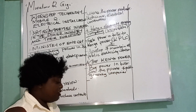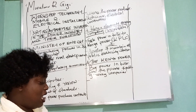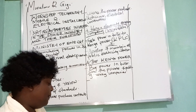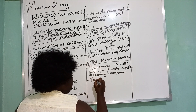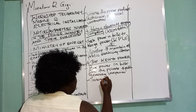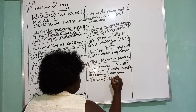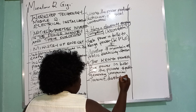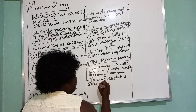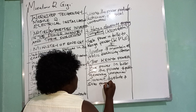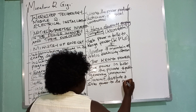The Kenya Power also transmits, distributes, and sells power to the consumers. So they transmit, distribute, and sell power to other consumers.